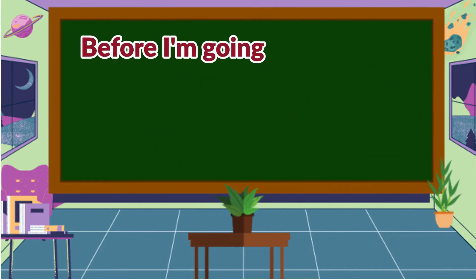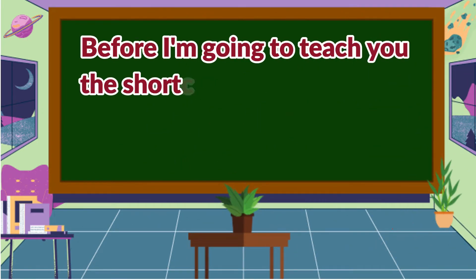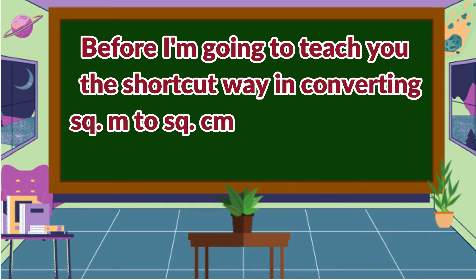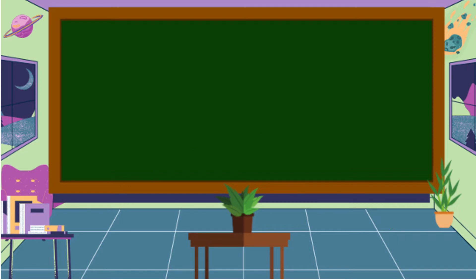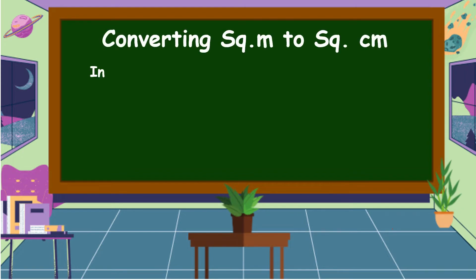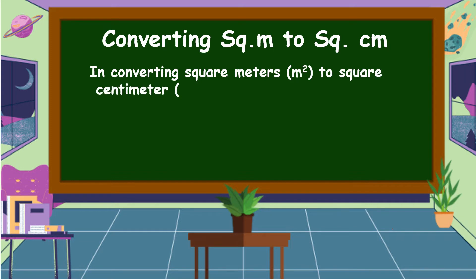Before I teach you the shortcut way of converting square meters to square centimeters, let us study the usual process first. Maybe this method was also introduced to you by your teacher. In the usual process for converting square meters to square centimeters, you multiply by ten thousand.